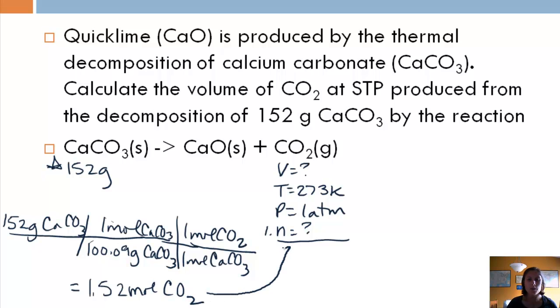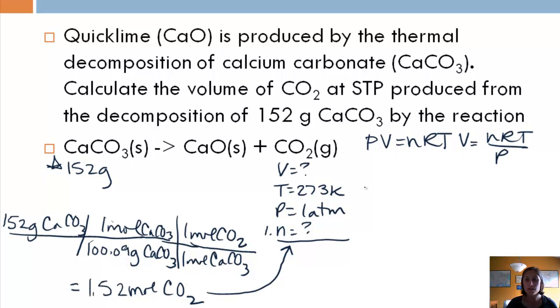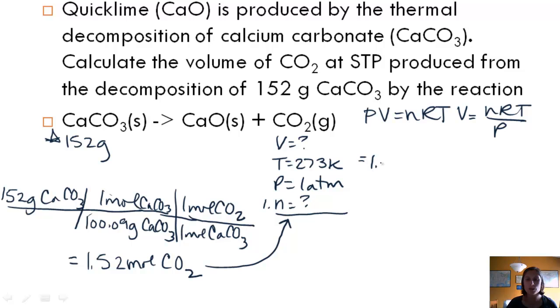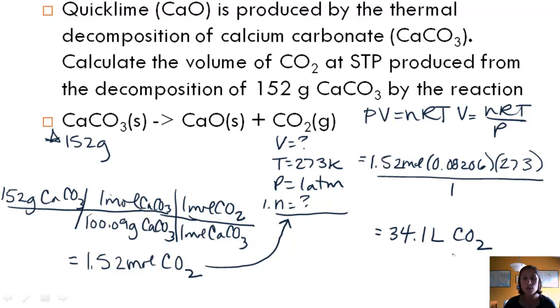Okay, so now we have the number of moles of CO2. So now we can use the ideal gas law, rearrange to solve for volume, plug in and get our volume. So we have our moles, which are 1.52, R is 0.08206, temperature needs to be in Kelvin, it is 273, and our pressure needs to be in atmospheres, and it is, it's 1. So if we do that math, we end up with 34.1 liters of CO2.